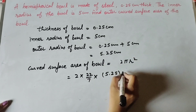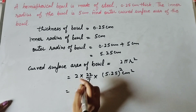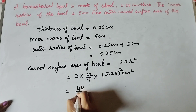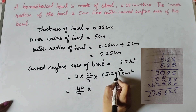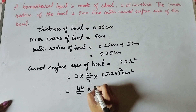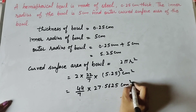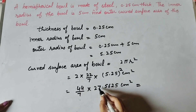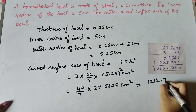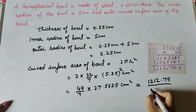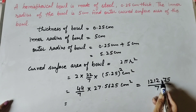Substituting: 2 × (22/7) × (5.25)² = 44/7 × 27.5625. So 44 × 27.5625 = 1212.75, and 1212.75 divided by 7 gives us the answer.